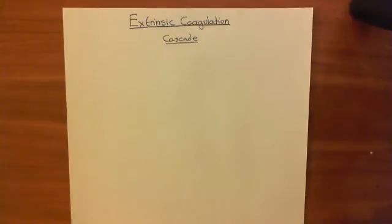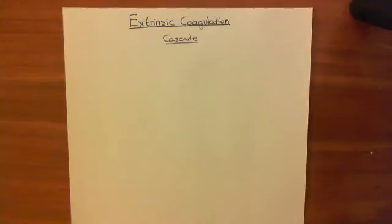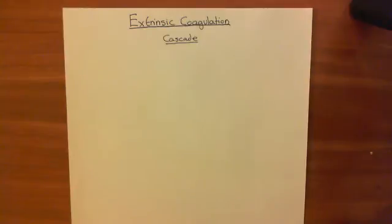The extrinsic coagulation cascade is set off when the clotting factors from within the blood — the coagulation factors from within the blood, which are made by the liver — come into contact with another protein that is outside of the blood and is in the membranes of cells in the peripheral tissues.